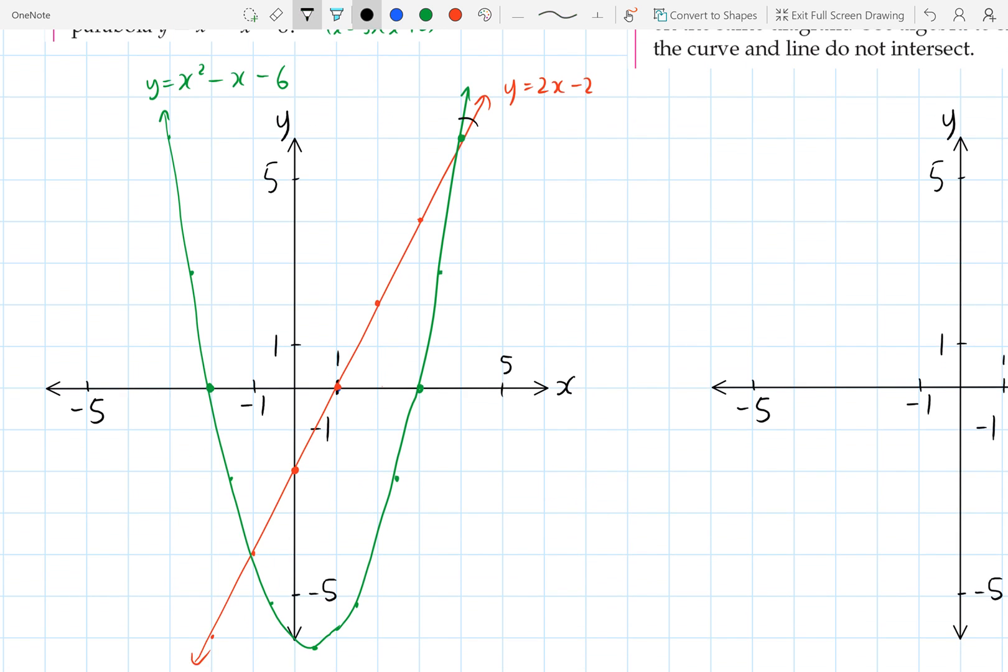So we can see our two points of intersection. We've got one here and one down here. So the coordinates of that one is 4 and 6, and the coordinates of this one is negative 1 and negative 4.